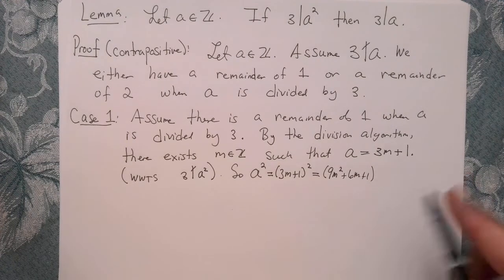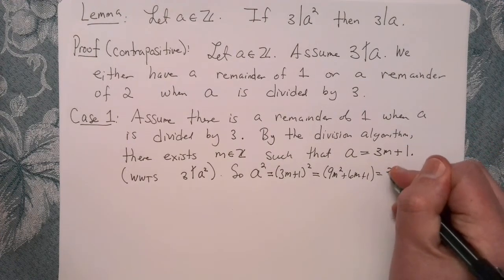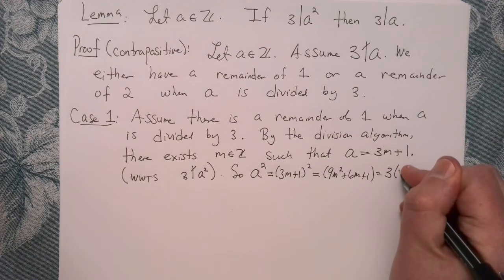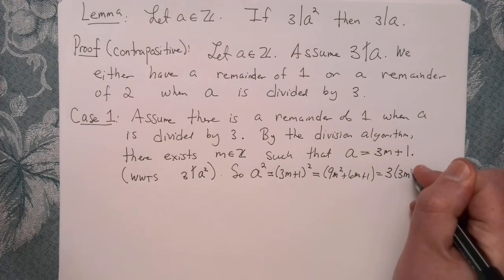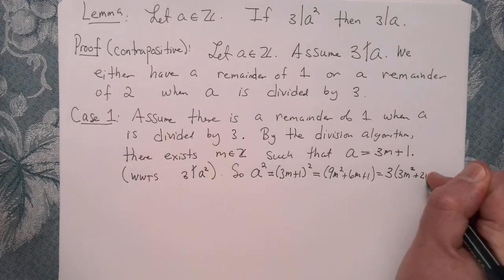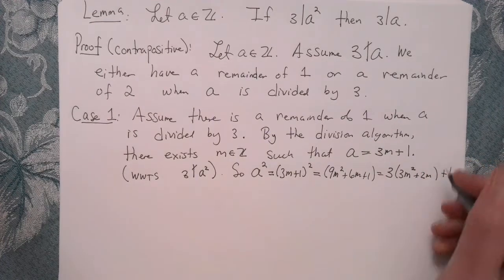But that's exactly 9M squared plus 6M plus 1. But we can consider the first two terms and factor out a 3. So that's exactly 3 times 3M squared plus 2M, and then plus 1 at the end.